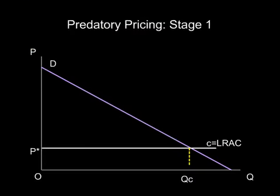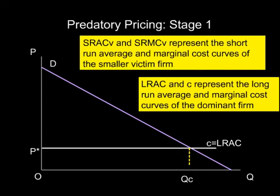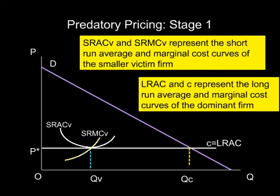In this example, there are two firms in the market. There is a smaller firm, which will subsequently become the victim of a predatory pricing strategy of a dominant firm. We assume that the dominant firm can supply the entire market at a price P*, equal to the long-run marginal cost C, which also equals the average cost of the dominant firm. However, a small firm with a U-shaped average cost curve, like that shown, would be able to make normal profits in this market.